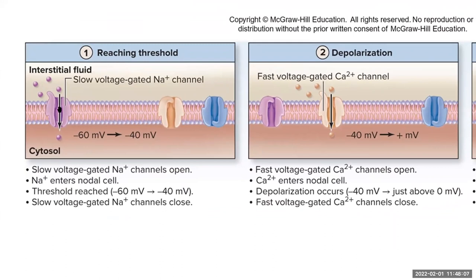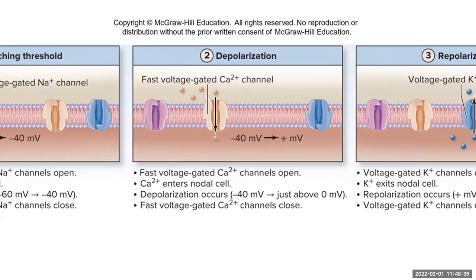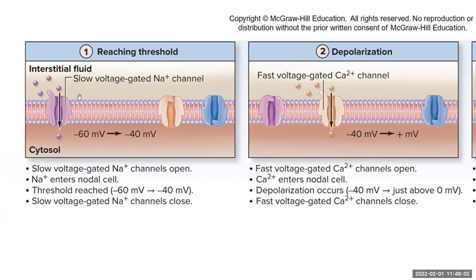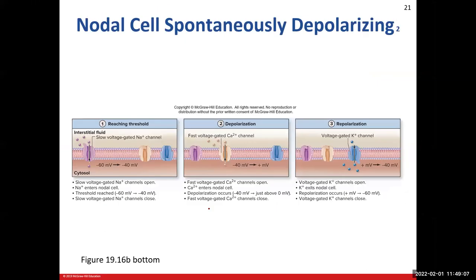To recap how we reach threshold: we open the slow voltage-gated sodium channels; sodium travels in and moves us to our threshold value of negative 40. Those sodium channels close, triggering the opening of our fast voltage-gated calcium channels. Calcium floods in and takes us to zero. Once we reach zero, calcium channels close and we undergo repolarization when voltage-gated potassium channels open and potassium flows out, dropping our membrane potential back down to negative 60. The potassium channels close, and we repeat the whole process over again.